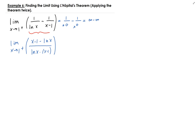Now we can apply L'Hôpital's rule, taking the derivative of the top and bottom. The derivative of the numerator (x minus 1) minus ln(x) gives us 1 minus 1 over x, where 1 over x comes from the derivative of ln(x).